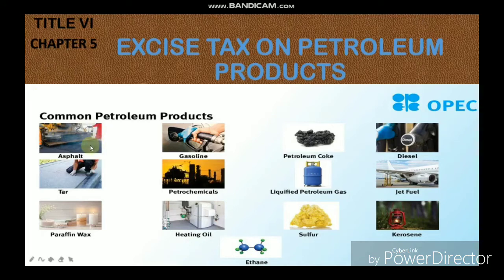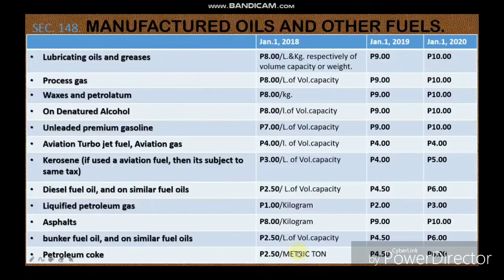We have here asphalt, tar, paraffin wax, gasoline, petrochemicals, heating oil, ethane, petroleum coke, liquefied petroleum gas, sulfur, diesel, jet fuel, and kerosene. These are the common petroleum products. Let's go to Section 148, which covers manufactured oils and other fuels.